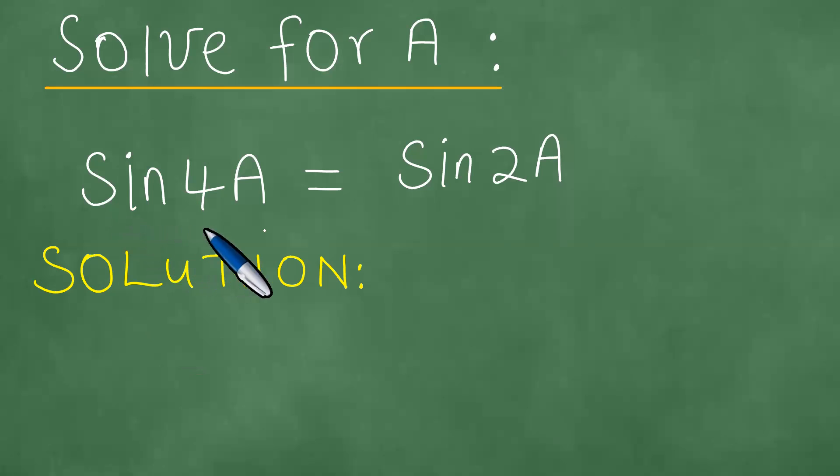We need to solve for A given sin(4A) = sin(2A). We present the solution to the problem. To present the solution to this problem, there are a couple of things we need to consider. But first, we have sin(4A) = sin(2A).